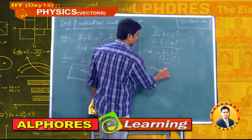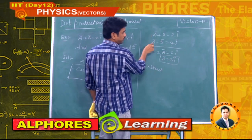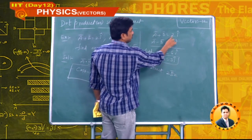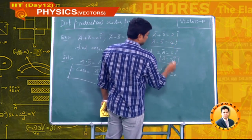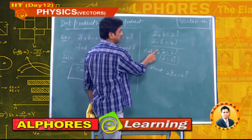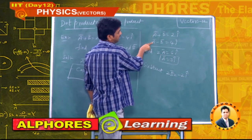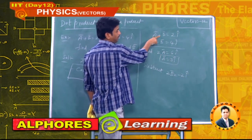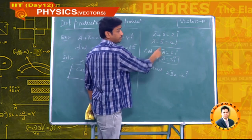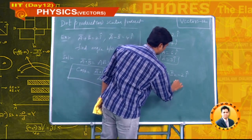Subtracting equation 1 from equation 2: the ā terms cancel, leaving 2b̄ = 2î − 4î = −2î, so b̄ = −î.